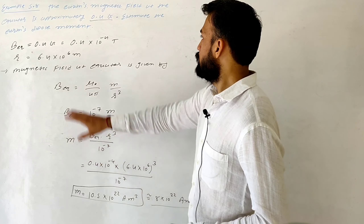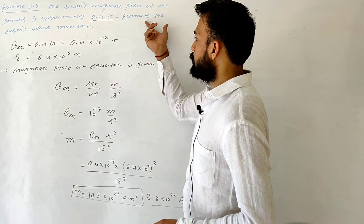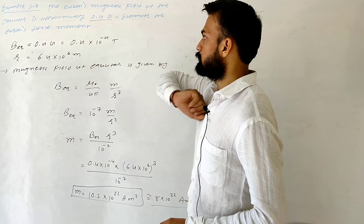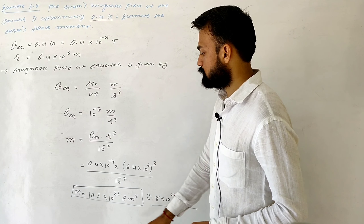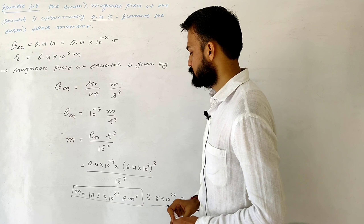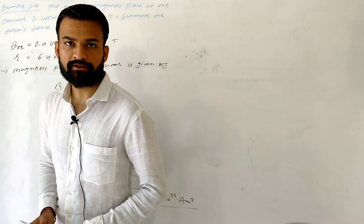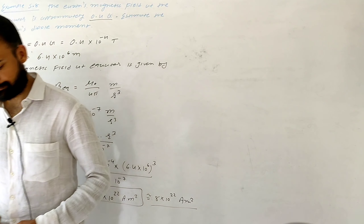The dipole moment of Earth is 10.5 into 10 to the 22 ampere meter square.